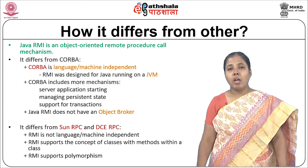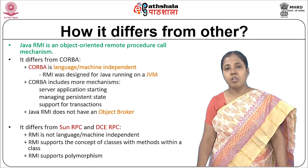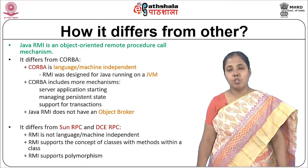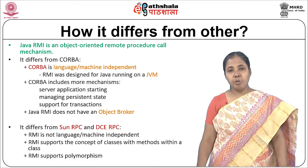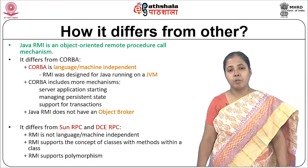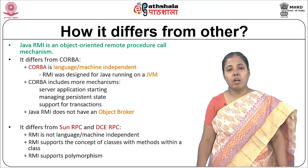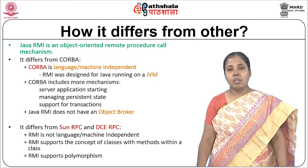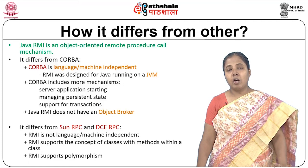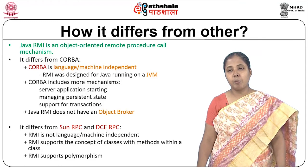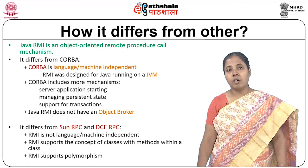Java does not have an object broker. Java RMI also differs from Sun RPC or DCE RPC. RMI is not language or machine independent — it is language and machine dependent, but it is not a platform-dependent mechanism. RMI supports the concept of classes with methods within a class, and RMI also supports polymorphism. Like Java programming, RMI is basically a package in Java which allows us to make a remote procedure call, just like we work with Java classes and methods.